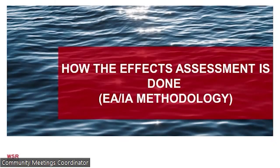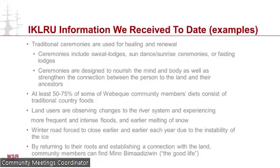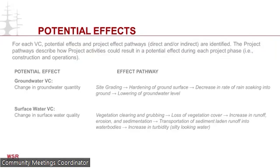Now we're going to talk about how the effects assessment is done. Engagement and consultation, as well as Indigenous knowledge, land, and resource use, feeds into the effects assessment steps — including identifying what will be studied, defining boundaries, identifying possible effects, and which are left over after mitigation, then looking at all effects together, identifying follow-up and monitoring, and overall advantages and disadvantages of the project. We have received a lot of Indigenous knowledge, land and resource use information so far, including the purpose of traditional ceremonies, reliance on country foods, and climate change impacts. Existing conditions for each VC are described through background research, engagement and consultation, and field studies.